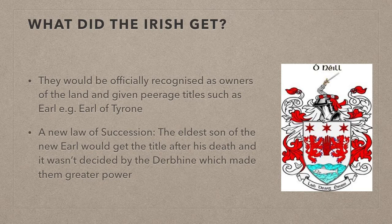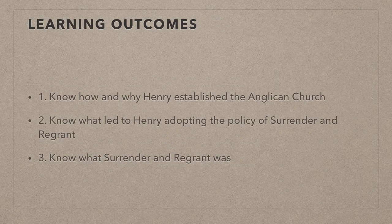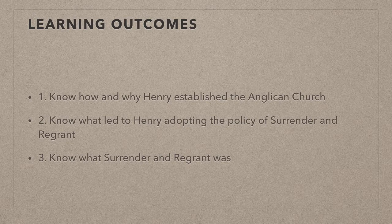However, this policy, though an improvement on trying to control Ireland with an army, still wasn't sufficient, and in the next video we will see the new policy of plantation. So that brings us to the end of our presentation. By now you guys should know how and why Henry established the Anglican Church, what led to Henry adopting the policy of Surrender and Regrant, and finally what Surrender and Regrant was. Thanks for watching — hope you guys got something good from this video.